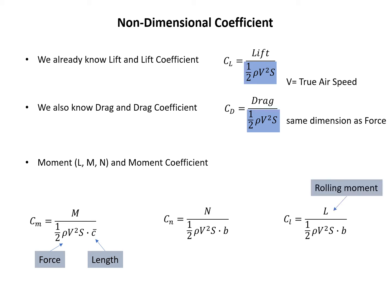I also want to mention that the L here is not lift but rolling moment, so don't mix them up. The very important thing here is why we use b or c̄ in the denominator as the characteristic length.